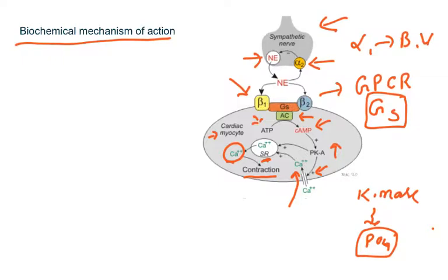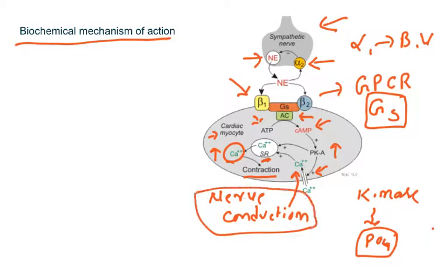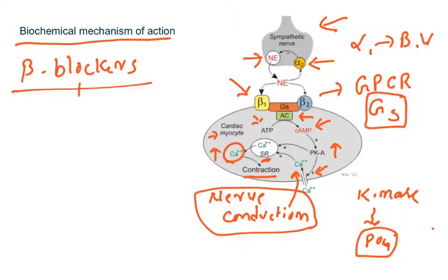The activation of beta 1 receptors on the heart finally results in contraction through calcium release. Calcium is not only required for contraction but also for nerve conduction in the heart, so both are under control of calcium ions. This is the biochemical mechanism of action of beta receptors.